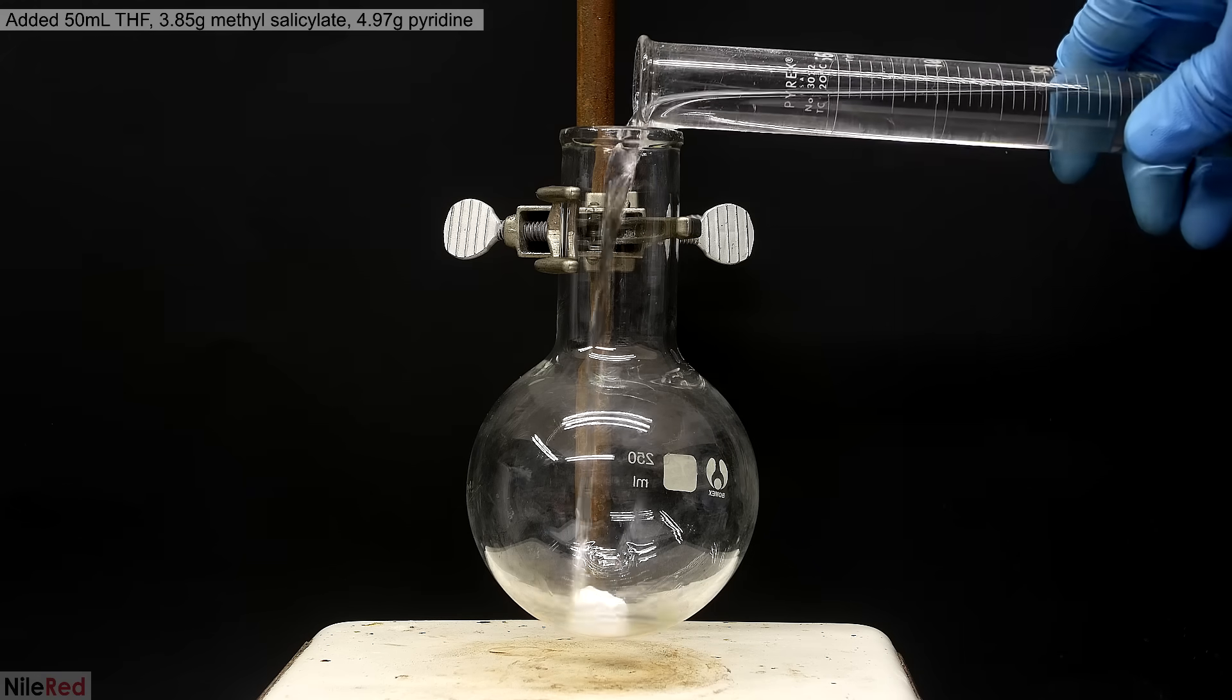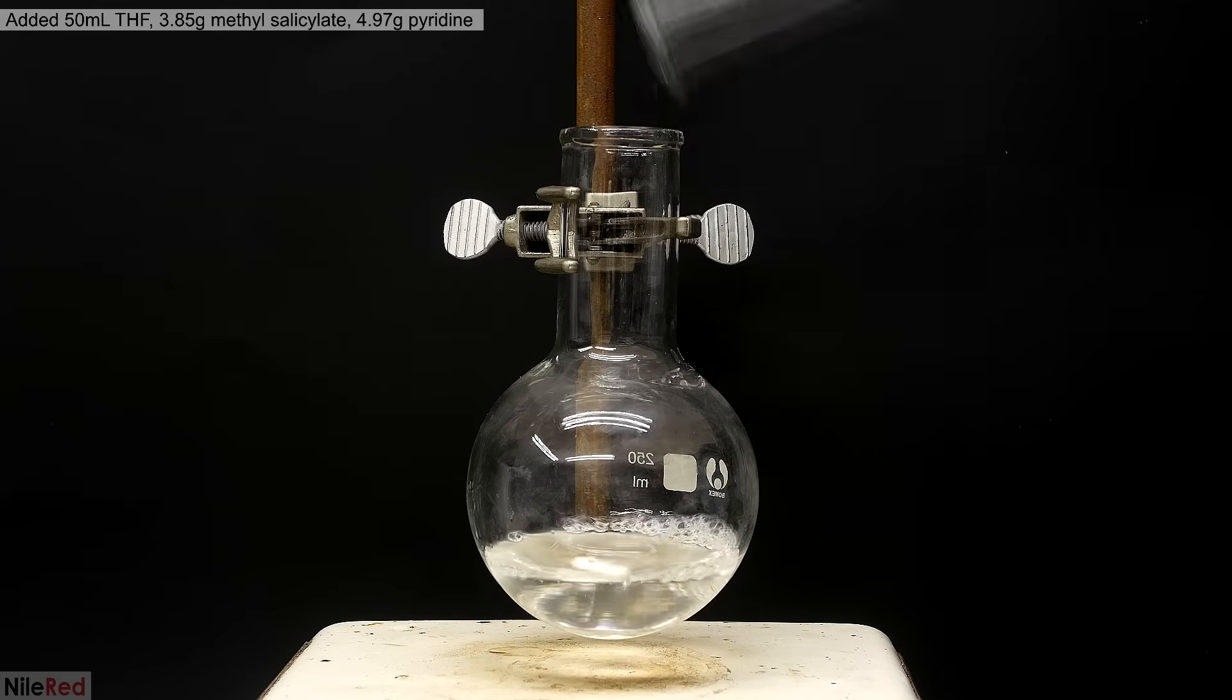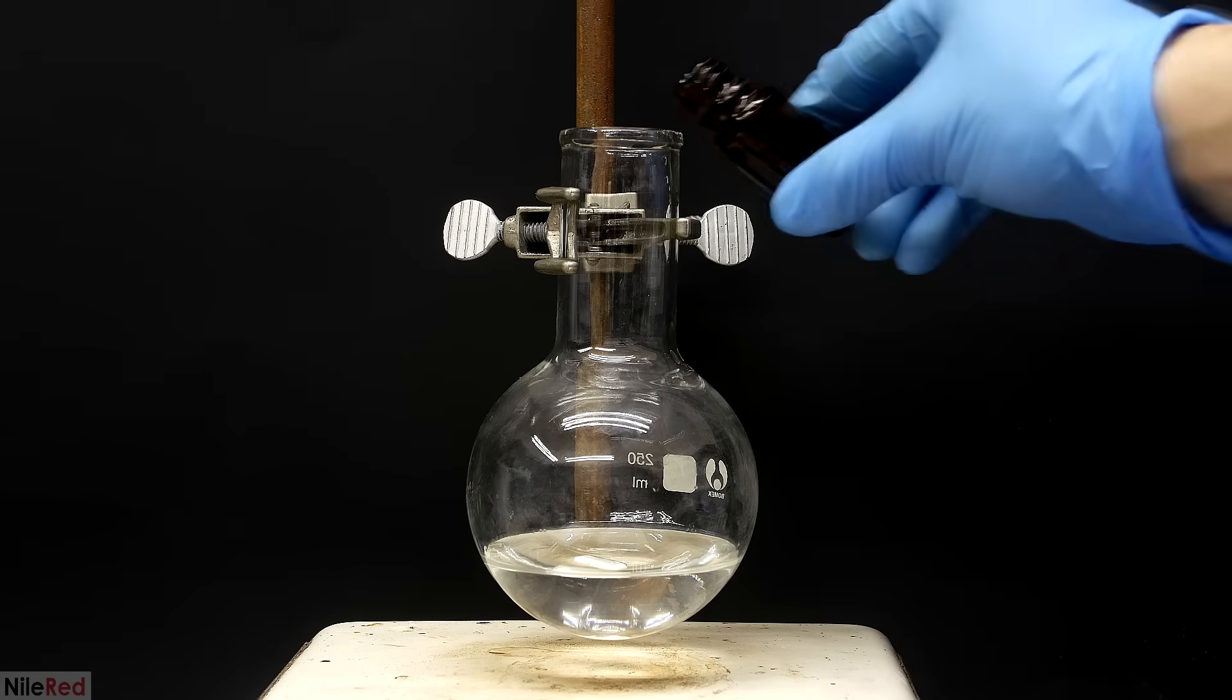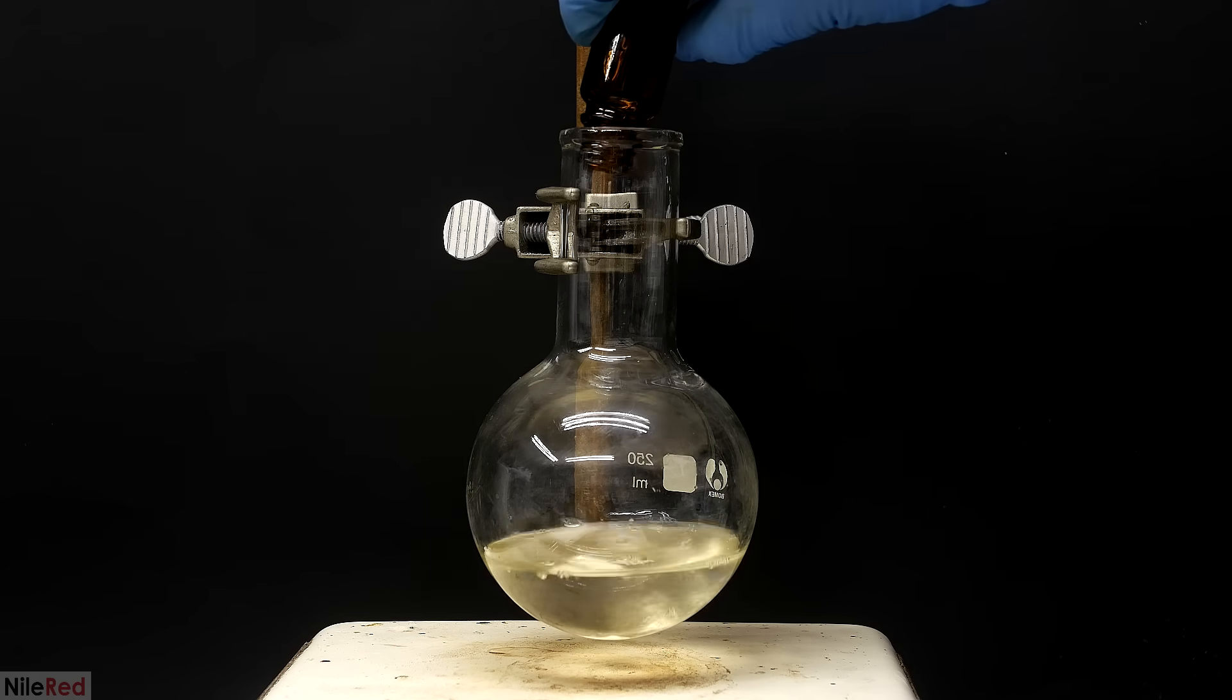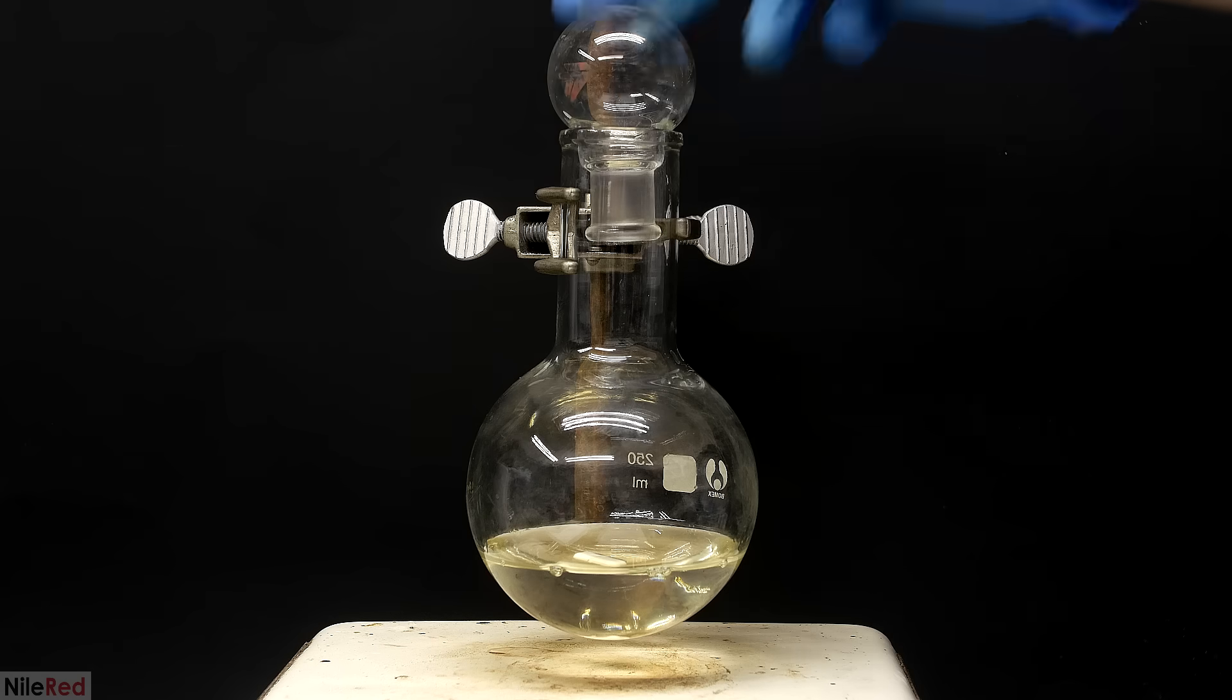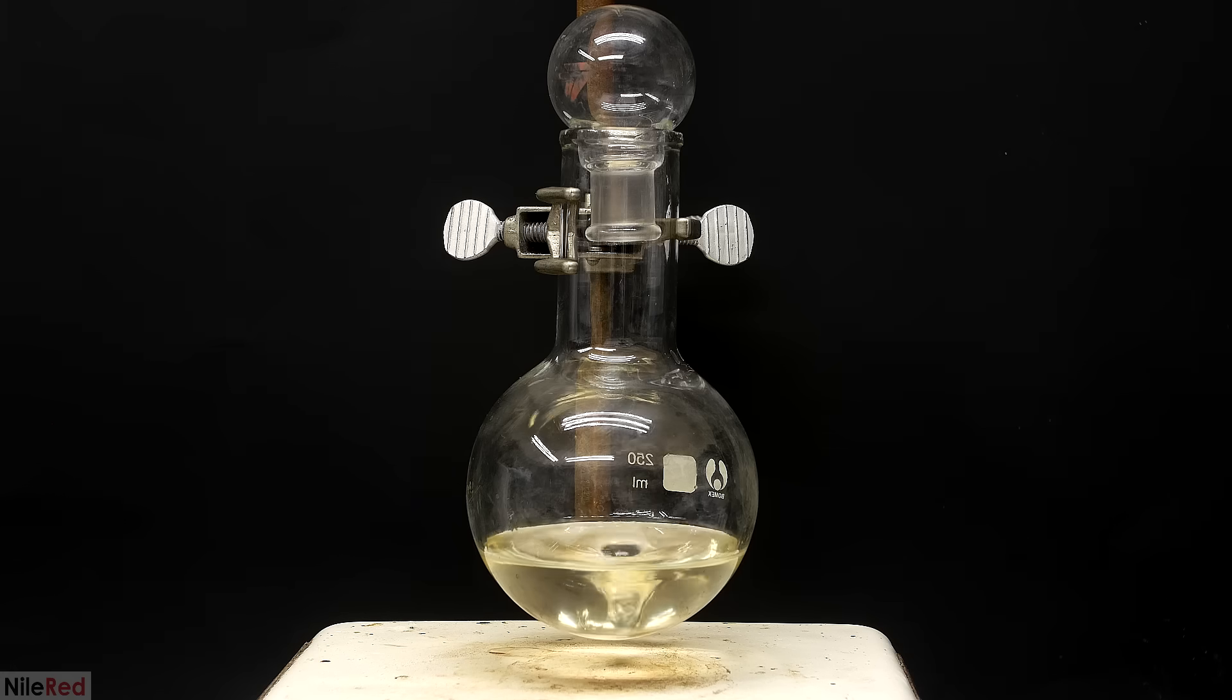I start by adding the reaction solvent, which is THF, followed by the wintergreen and pyridine. In theory, the pyridine should be colorless, but it's a little old, so it turned yellow, but this really isn't a problem. With everything added, I cover the top with a small flask, and I start the magnetic stirring.